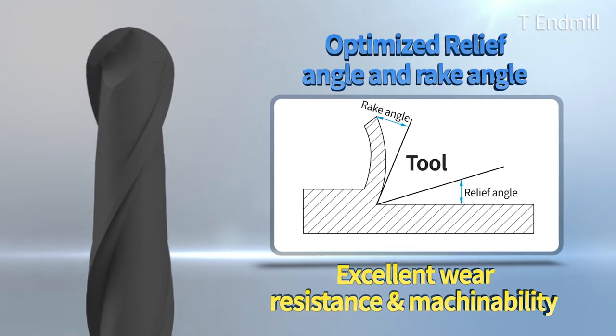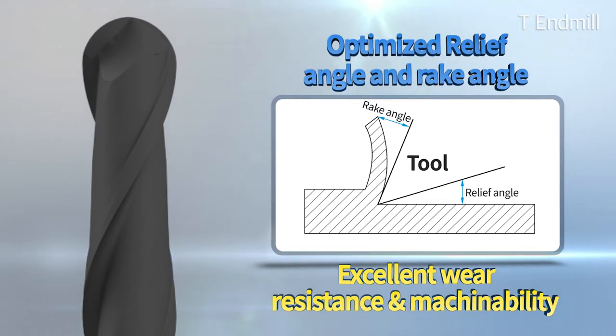With its optimized relief and rake angle, T and Mill series shows excellent wear resistance and machinability, ensuring stable cutting performance.